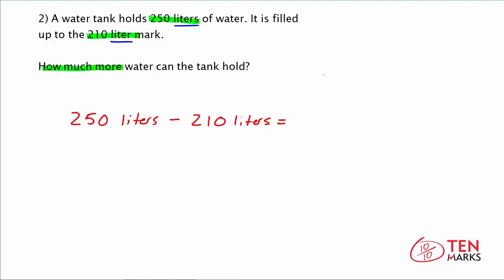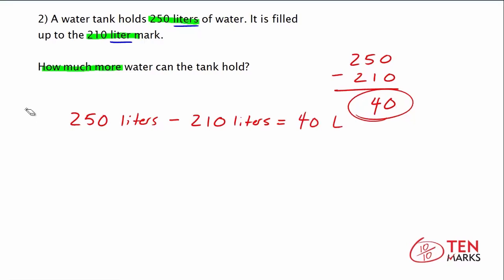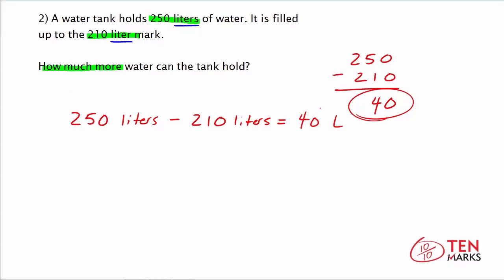So let's just do this vertically over here. So 250 minus 210. 0 minus 0 is 0. 5 minus 1 is 4. And 2 minus 2 is 0. So that means the difference of these two numbers is 40, which means the tank can hold 40 liters more than it currently is holding.